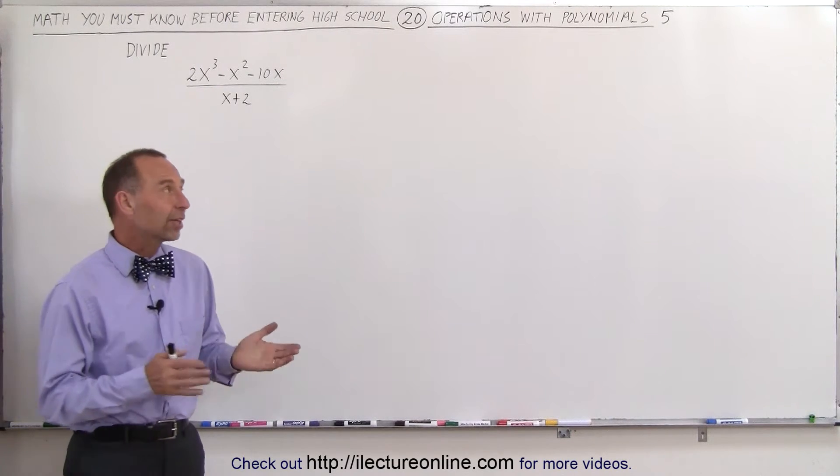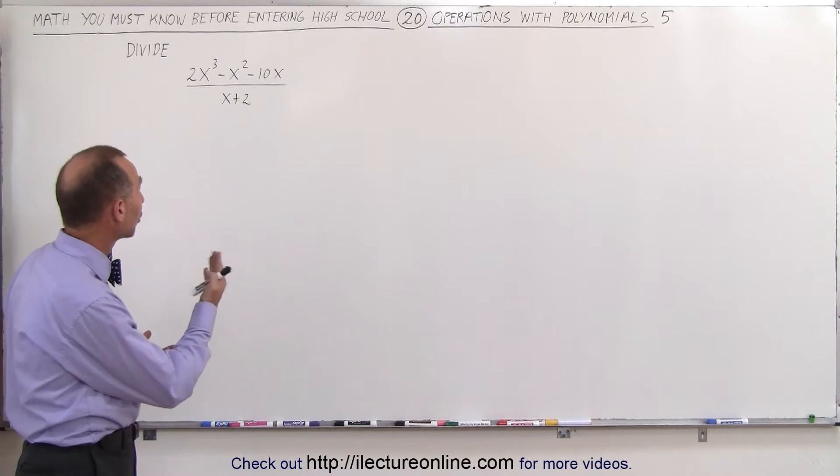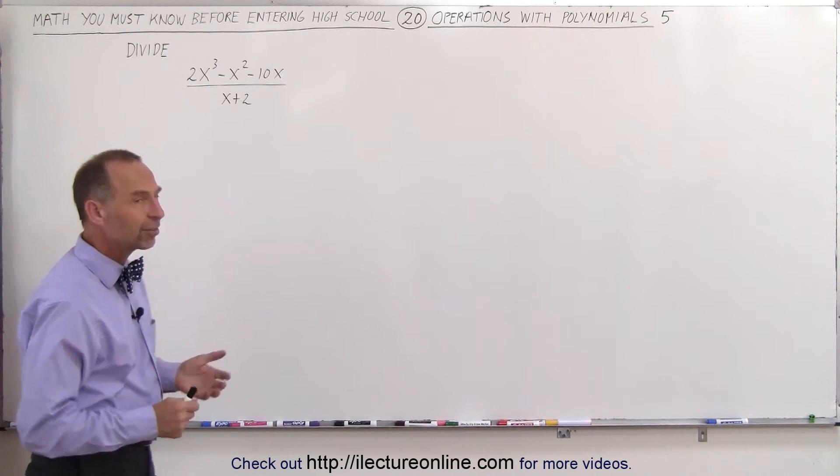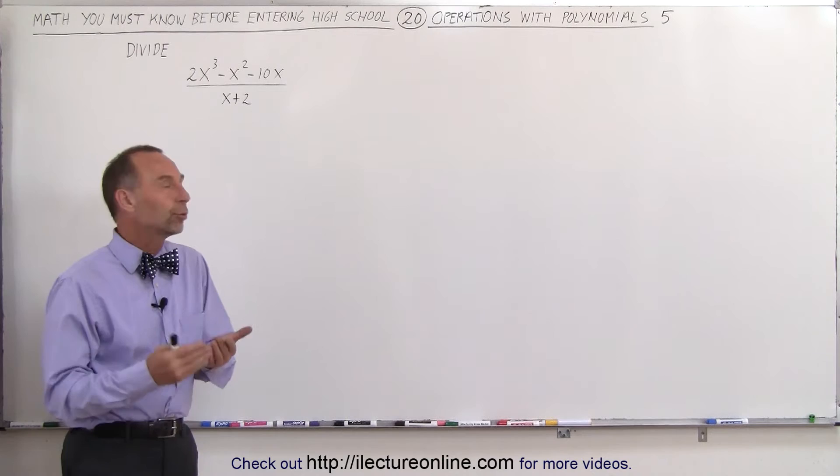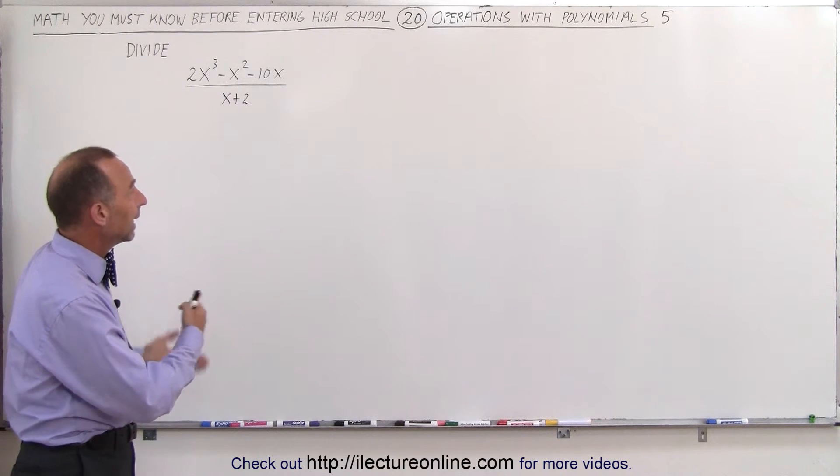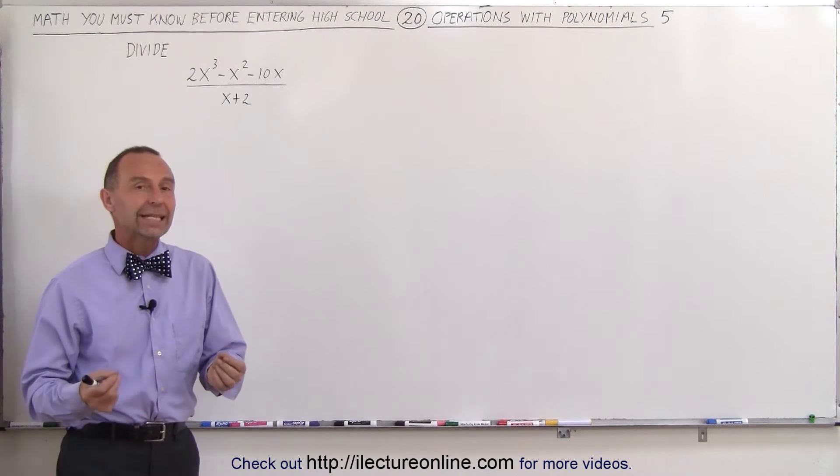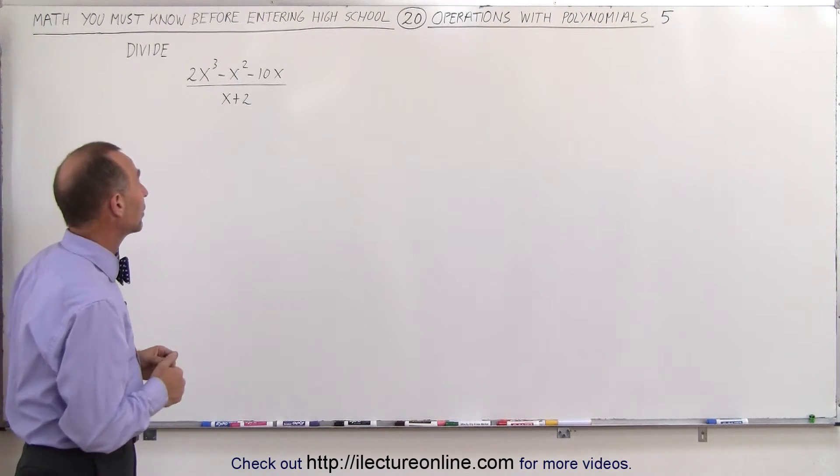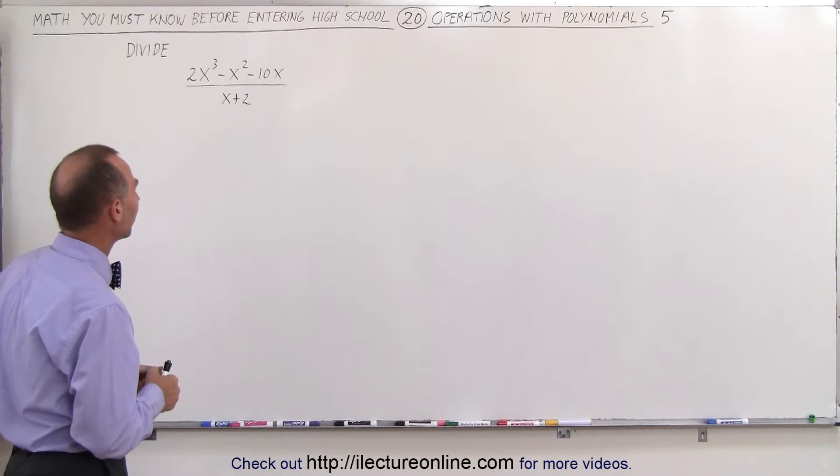Welcome to ElectronLine. In this next video we have to divide the trinomial 2x³ - x² - 10x by the binomial x + 2. Now this can actually be done in two ways. First we'll do longhand division and then we'll do factoring, so you can see the similarity between the two techniques and how they both end up with the same result.